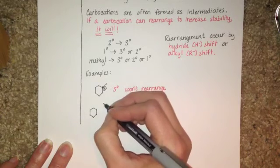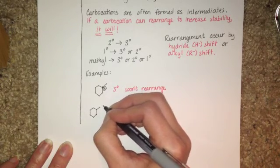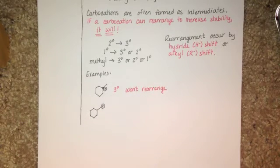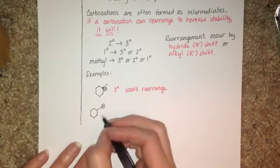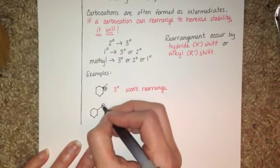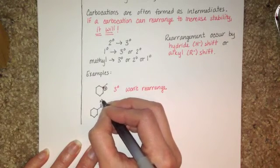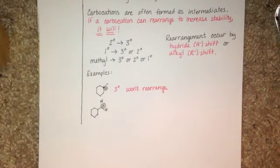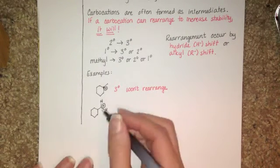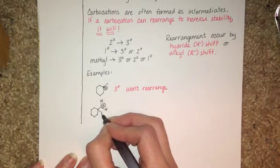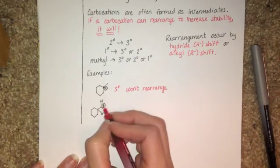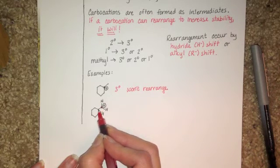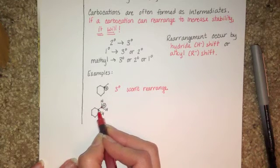Here's another example. We put the positive charge on a different carbon atom. It's going to help to draw a few hydrogens in. I'm going to draw the hydrogens in on the carbon that's got the positive charge. So we can see that there's just two bonds there. That's why it's positively charged.